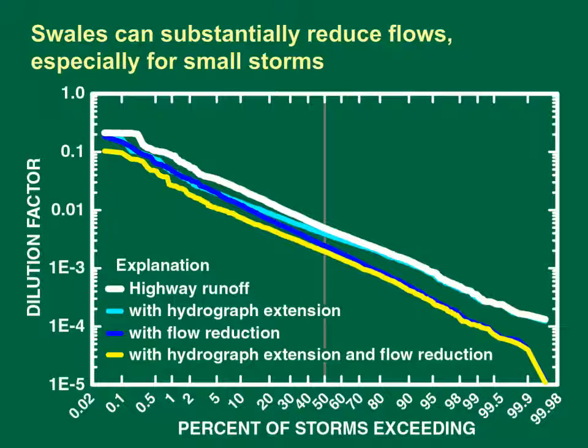SELDOM modeling indicates that swales can substantially reduce flows, especially for small storms. This graph shows the potential effectiveness of a grassy swale for modifying downstream storm flows. This example dilution factor analysis was done using data from the USGS stream gauge on Sasko Brook near Southport, Connecticut. The dilution factor is the proportion of downstream flow that is comprised of highway runoff. A dilution factor of 1 occurs when there is no upstream flow, and a small dilution factor indicates that highway runoff is a small proportion of downstream flow. The dilution factor is the inverse of dilution.